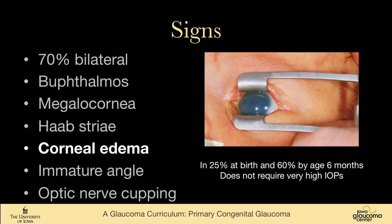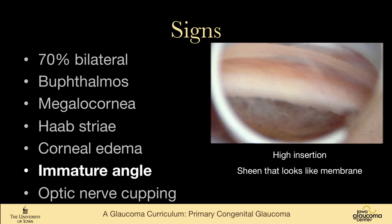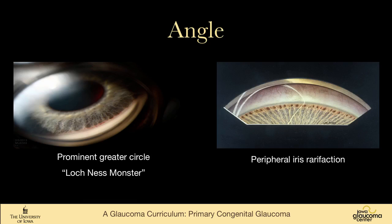In a quarter of these patients, the corneas are cloudy at birth; 60% by the age of six months. It's important to remember that in these children, it does not take much pressure to cause corneal edema — they can have corneal edema at pressures in the 20s, whereas that would never happen in an adult. They have an immature angle with a high insertion and a sheen that looks like a membrane. The angles of children with primary congenital glaucoma show a prominent greater circle of the iris, and the iris in the periphery is rarefied or thin.